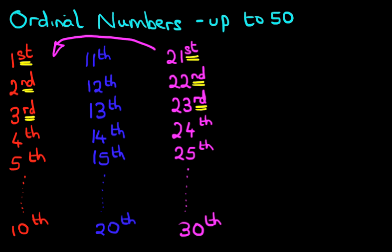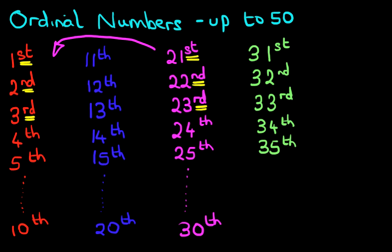Now let's look at the next one, from 31 to 40. Now how do you think this looks? I'm just going to cross this out and change colors. We've got 31st, 32nd, 33rd, 34th, 35th. And they carry on all the way down to 40th.